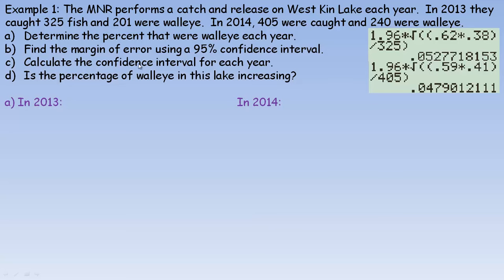This kind of example is one place where you'll see a confidence interval. The MNR — and if you're not in Ontario, Canada, that stands for Ministry of Natural Resources — performs a catch and release on West Ken Lake each year. In 2013 they caught 325 fish and 201 were walleyes. In 2014, 405 were caught and 240 were walleye.